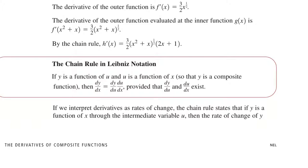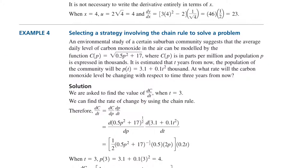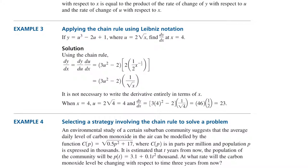This derivative exists if dy/du and du/dx both exist. Let's assume y equals u³ minus 2u plus 1 and u equals 2 root x. We are looking for dy/dx at x equals 4. When x is 4, u is also 4. dy/dx equals dy/du times du/dx. Derivative of y with respect to u is 3u² minus 2, and derivative of u with respect to x is 1 over root x. We multiply these two, then substitute x equals 4, which corresponds to u equals 4, and find the final answer.